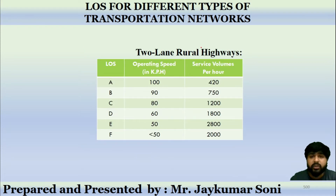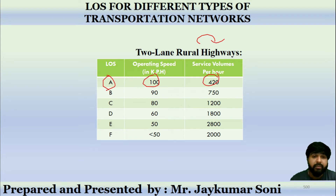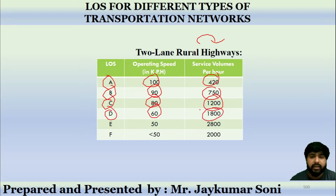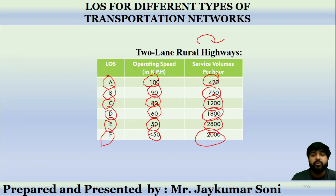For two-lane rural highways: LOS A has 100 km/h speed and 420 service volumes per hour; B has 90 km/h and 750; C has 80 km/h and 1200; D has 60 km/h and 1800; E has 50 km/h and 2800 service volumes per hour; and F has less than 50 km/h with approximately 2000 service volumes per hour.